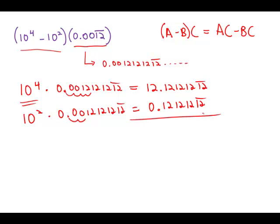So now we want to subtract these two. Notice what happens — everything to the right of the decimal place cancels and we're just left with 12. Answer choice E.